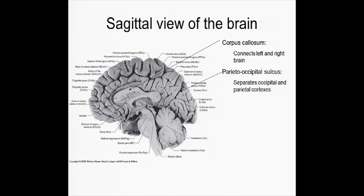So here is a sulcus that separates the occipital cortex of the visual system and the parietal cortex.